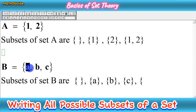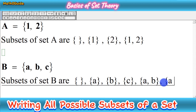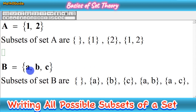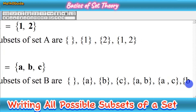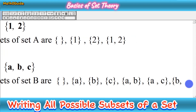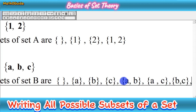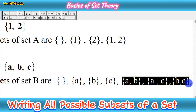Now we move to subsets with two elements. Since we have three elements, we follow a sequence: first write A with B, then skip B and write A with C. So we get {A, B} and {A, C}. Since A has been paired with all other elements, we now write {B, C}. These three subsets — {A, B}, {A, C}, and {B, C} — are all the two-element subsets of set B.